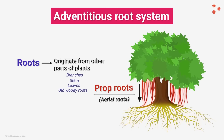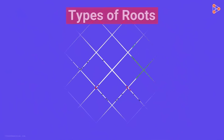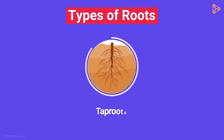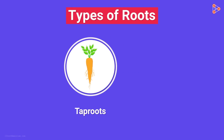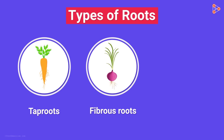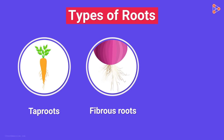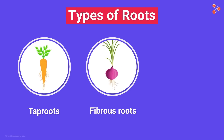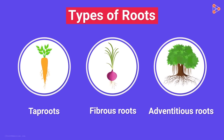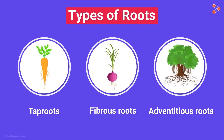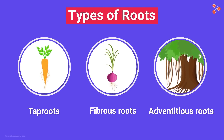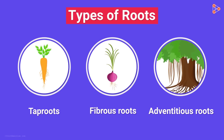Now let's revise the types of the roots. The first type is tap roots — a single long primary root system with smaller secondary and tertiary roots arising from it, just like in the case of carrots. The second type is fibrous roots, where several smaller roots come together to form a single bunch-like structure, just like in the case of onion roots. Lastly, we have the adventitious root system, where the root arises from different parts of the plant like the stem, branches, and leaves — the prop roots of the banyan tree being a good example.